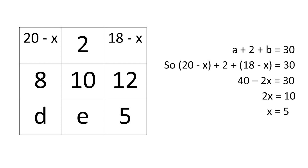Expanding that, we get 40 minus 2X equals 30, so 2X equals 10, and therefore X equals 5. We have found that the bottom right corner is 5, so the answer is C.